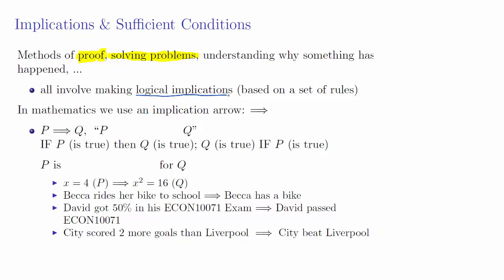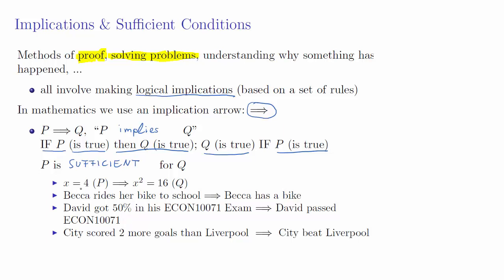Let's start with what we call a logical implication. In mathematics we use a double arrow to represent a logical implication — we say P implies Q. This means that if P is true then Q is true. You can also formulate it the other way: Q is true if P is true. Either way, what this says in words is that P is sufficient for Q. As soon as you know that P is true, you know that Q is true.